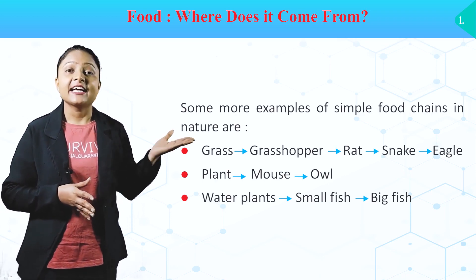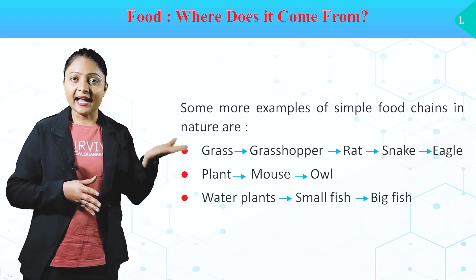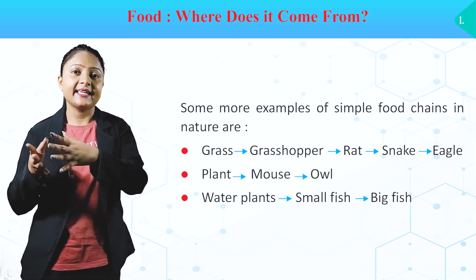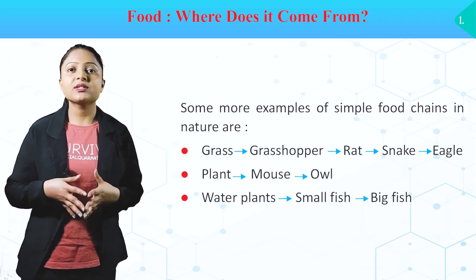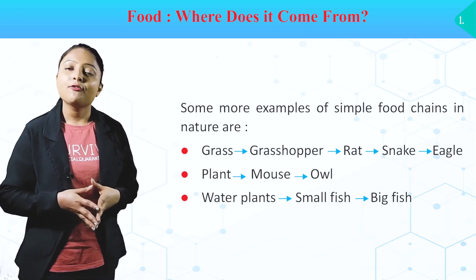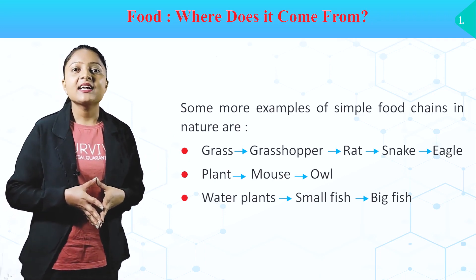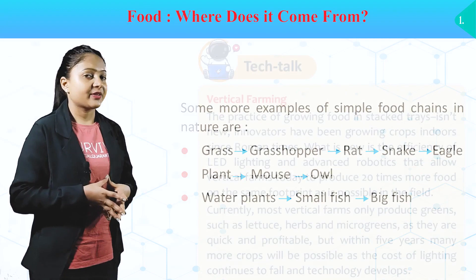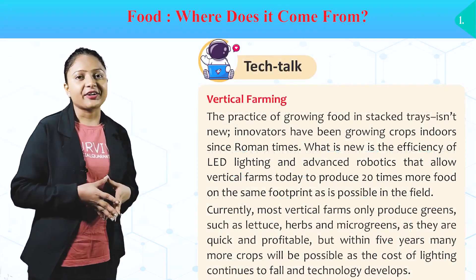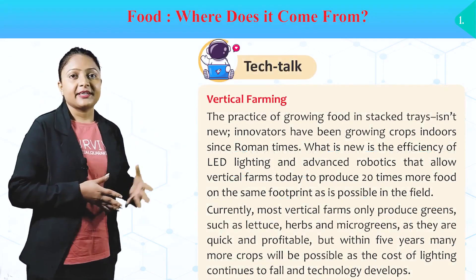Some more examples of simple food chains in nature are: Grass → Grasshopper → Rat → Snake → Eagle; Plant → Mouse → Owl; Water Plants → Small fish → Big fish.